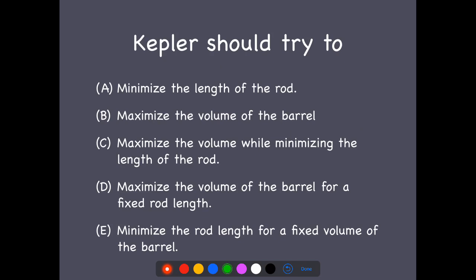What about maximizing the volume while minimizing the length of the rod? So that seems reasonable. We want to get as much wine for the lowest price, maximize the volume of the barrel for a fixed rod length, or minimize the rod length for a fixed volume.